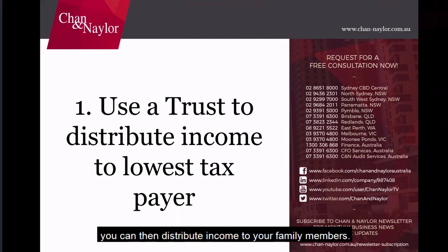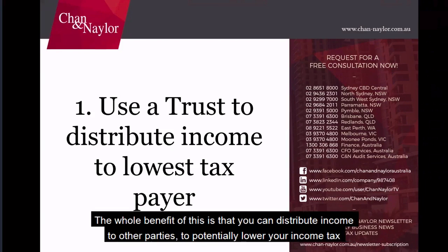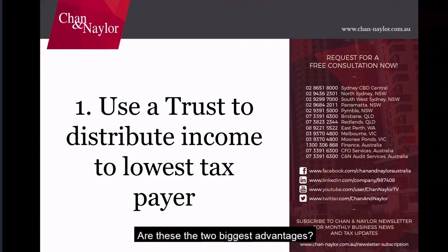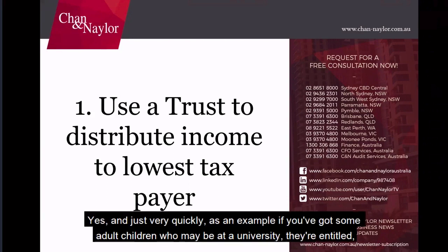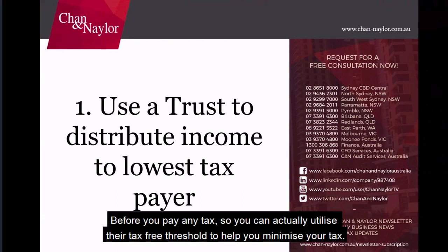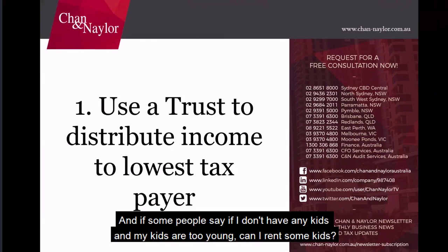You can set up the trust to run the business, and from that trust distribute income to your family members. The two biggest advantages are: potentially lowering your income tax by distributing to lower-bracket family members, and asset protection in the case of a legal claim. For example, if you have adult children at university — 18 years of age or older — they're entitled to the $18,200 tax-free threshold before paying any tax, so you can utilize their threshold to minimize your tax.